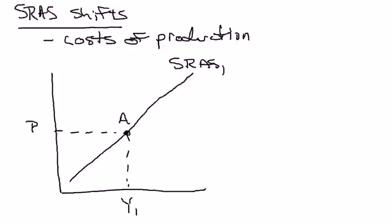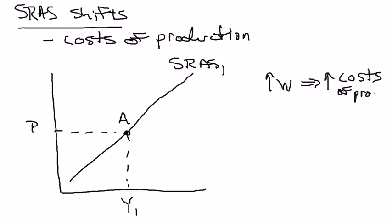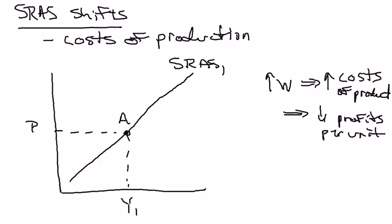Let's say there's an increase in nominal wages, which I'll abbreviate as W. That's going to increase costs of production. Remember, wages are one of the largest components of the cost of production for firms. Assuming the price level is held constant — so the average price of final goods and services is held constant — that's going to decrease profits per unit of output.